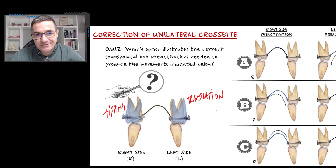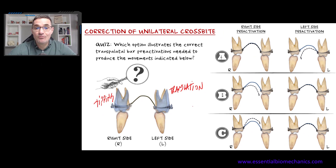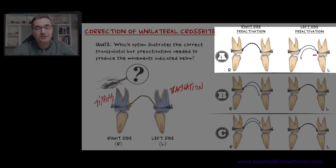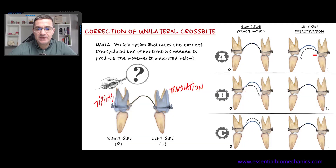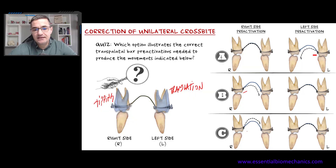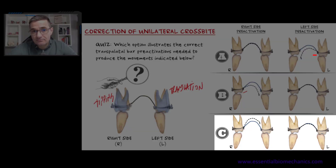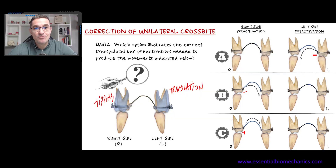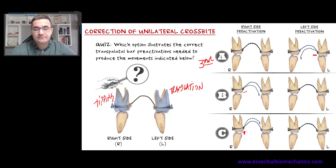I have offered you three options to achieve these specific movements. In option A, you can see a lingual crown torque applied on the contralateral side. In option B, we have a lingual crown torque applied on the ipsilateral side — the crossbite side. And in option C, we have a buccal torque applied on the crossbite side. Remember that all three pre-activations were made only regarding torques — only third-order bends. No expansion and no constriction were applied in this question.